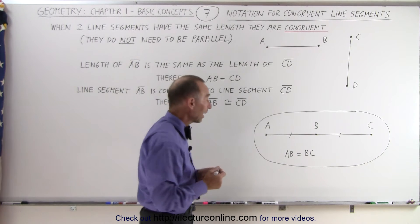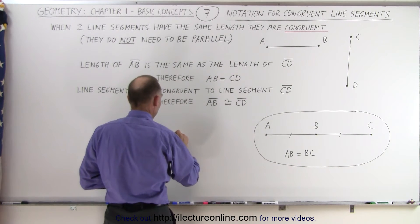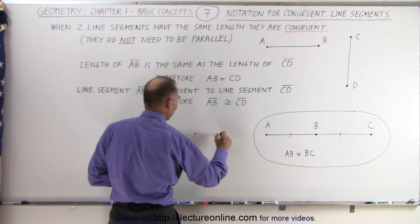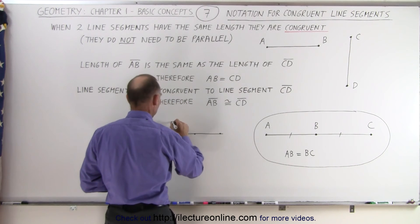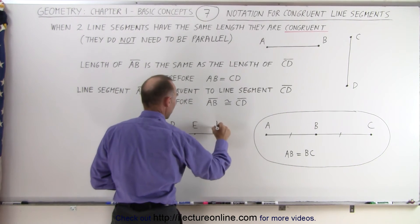Then if we have another two line segments, let's say we have a line segment from D to E to F. So let's say this is D, this is E, and this is F.